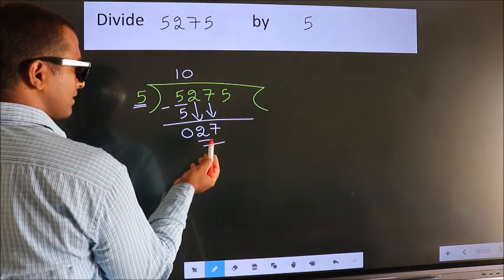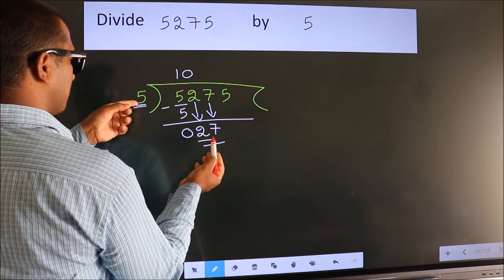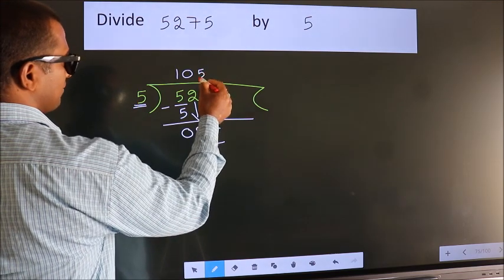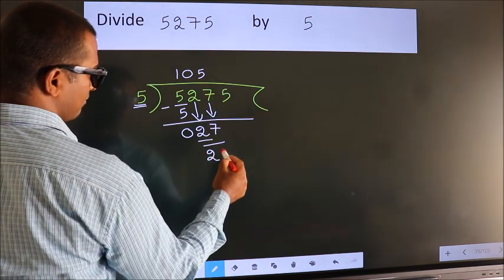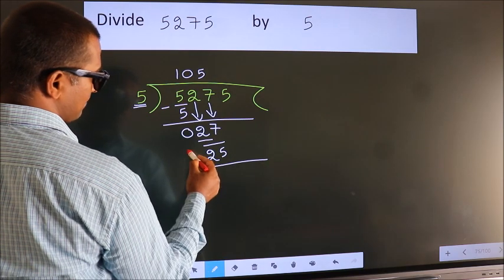A number close to 27 in the 5 table is 5 fives, which is 25. Now we subtract.